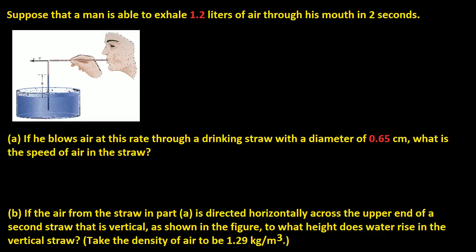In this video, I want to show you how to solve this problem where a man is exhaling 1.2 liters of air through a straw in 2 seconds. This number can differ for you, so keep that in mind. Part A says: if he blows air at this rate through a drinking straw with a diameter of 0.65 centimeters, what is the speed of air in the straw?